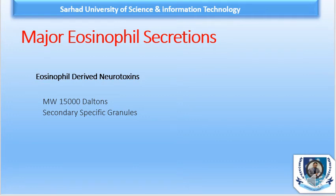Finally, we have Eosinophil-Derived Neurotoxin (EDN). This protein has a molecular weight of 15,000 daltons and is found in the matrix of secondary specific granules. It acts as a powerful neurotoxin, causing severe damage to the myelin sheath of neurons. This neurotoxic reaction results in stiffness, ataxia, weakness, and muscle wasting.